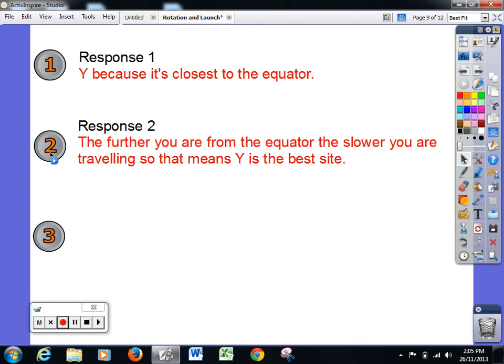So having a look at response two. The further you are from the equator, the slower you are travelling. So that means Y is the best site. This gives more information as to why we would select Y, because it has the understanding that the equator is the fastest part. So it has something to do with the addition of velocities. So we are getting on track, but we wouldn't mark that as a high response. So if we are giving this a mark out of four, maybe it is a one or a two.